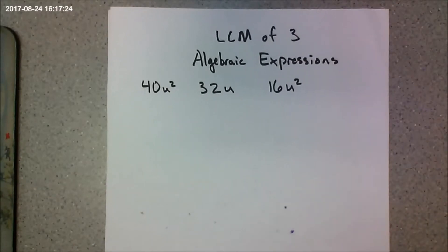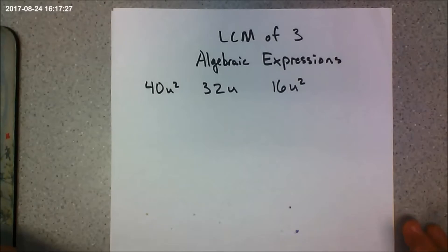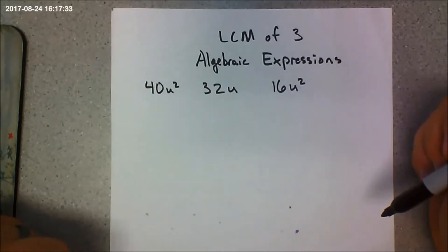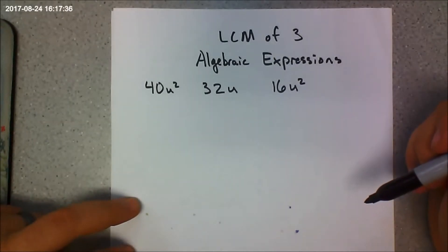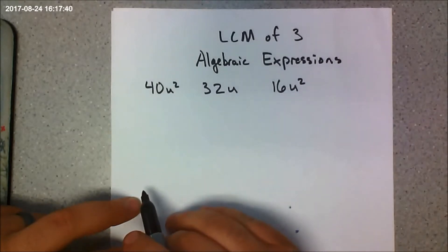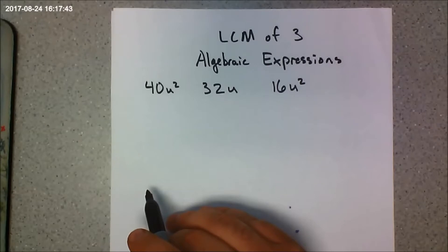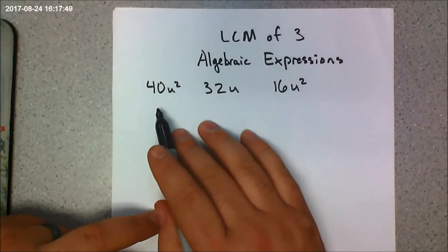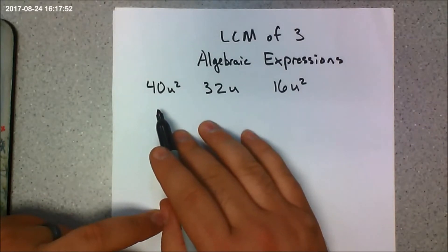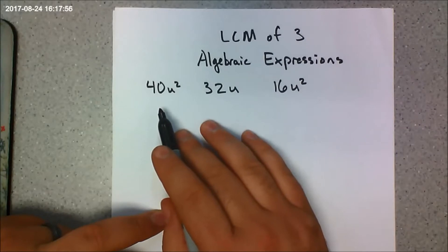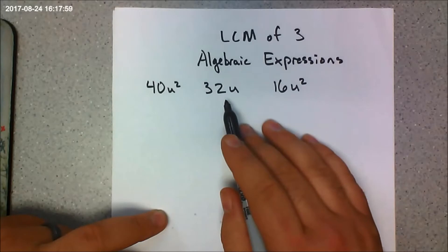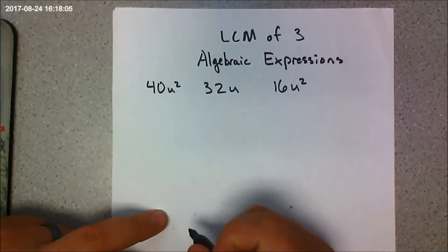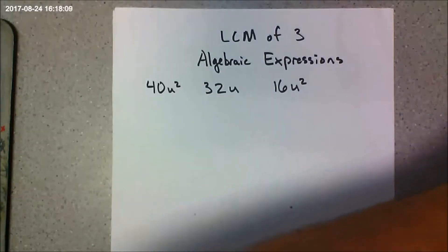Hello everyone and welcome back to Mr. Anderson's Algebra 1 Lessons. Today I'd like to talk about how to find the lowest common multiple of three algebraic expressions. An algebraic expression has a number and a variable tied to it. The three expressions I have are 40u squared, 32u, and 16u squared.